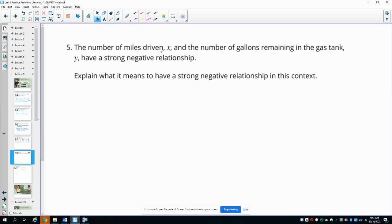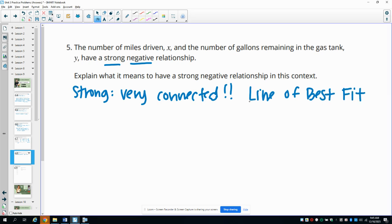Number five, the number of miles driven and the number of gallons of gas remaining in a tank have a strong negative relationship. Explain what it means to have a strong negative relationship in this context. So this is going to mean, so strong is that they are very connected, right? They're very connected to each other. And like a line of best fit would very nicely be able to predict this.